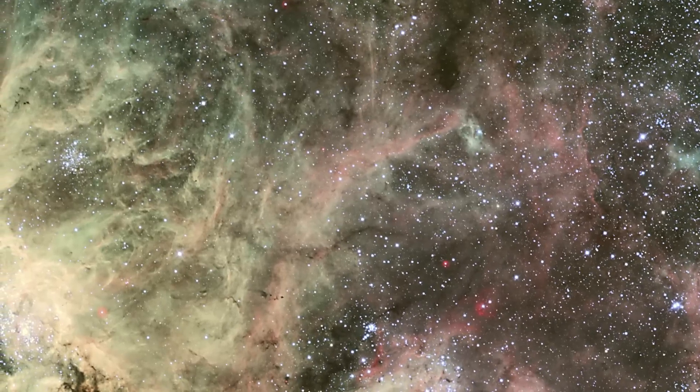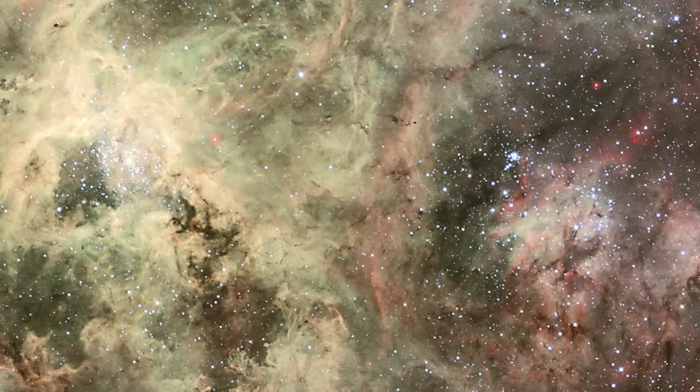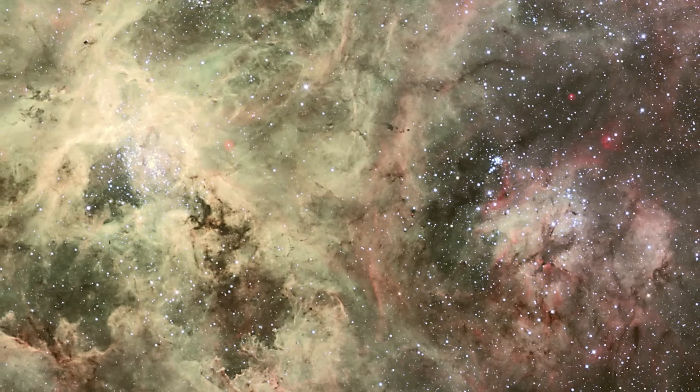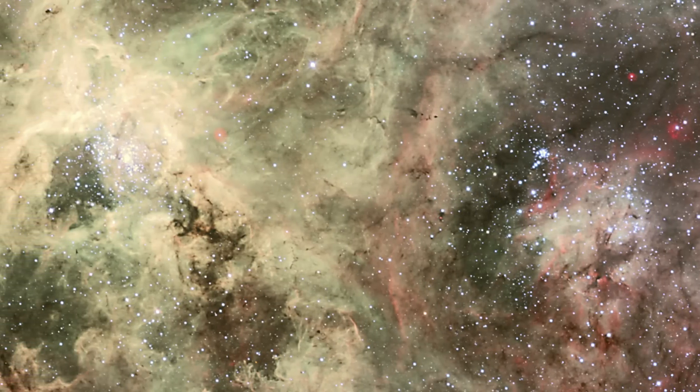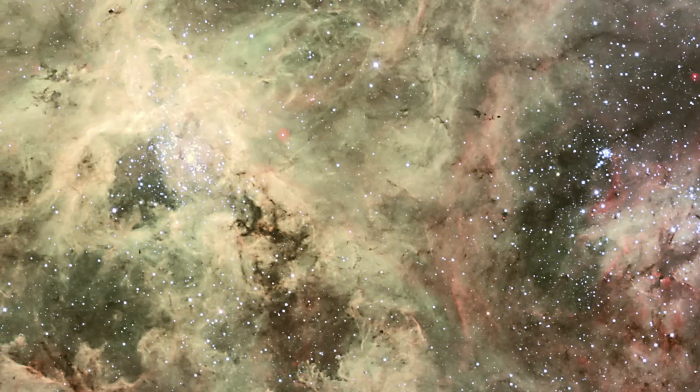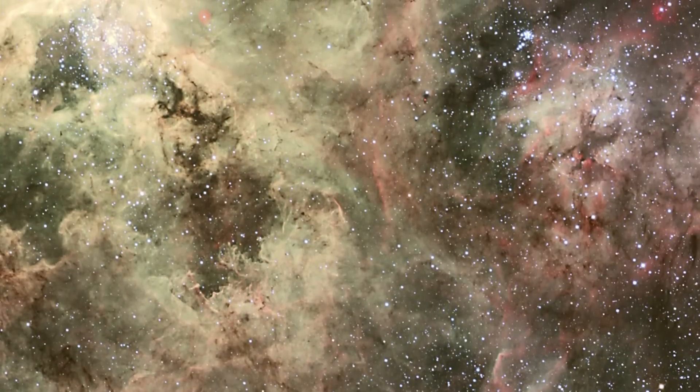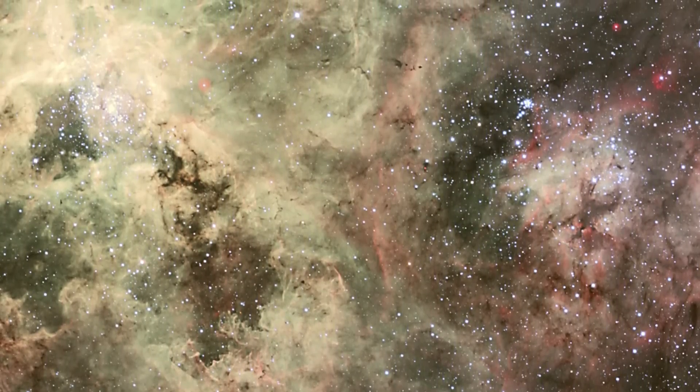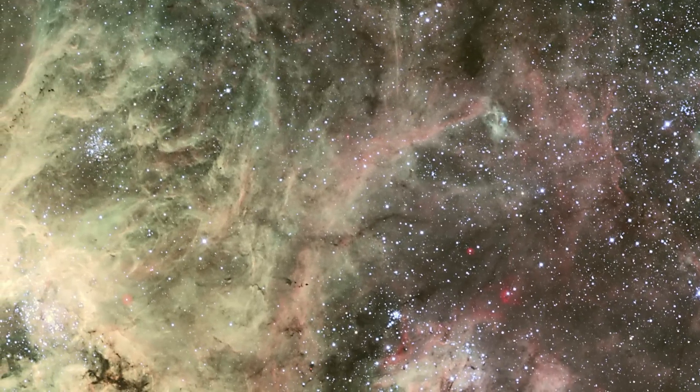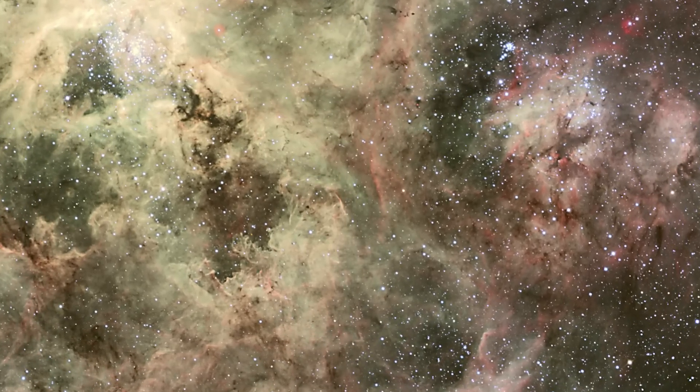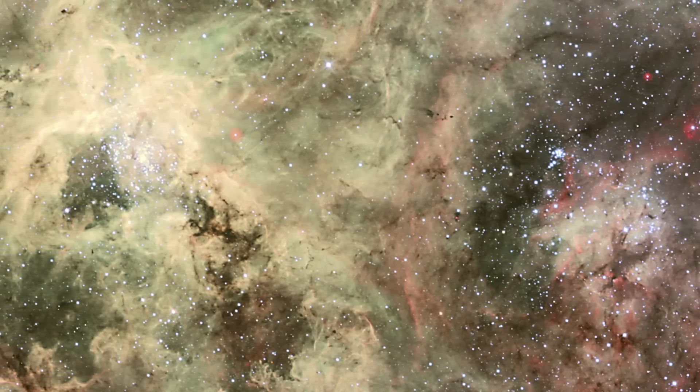Within this image is the runaway heavyweight star called 30-door number 016. It is 90 times more massive than the sun, and is traveling at more than 400,000 kilometers an hour from its home. The young star, only 1 million to 2 million years old, may have traveled about 375 light years from its suspected home in bright star cluster R136. Nestled in the core of 30 Doradus, R136 is one of the most massive young star clusters in nearby galaxies, containing several stars topping 100 solar masses each. 30 Doradus, also called the Tarantula Nebula, resides roughly 170,000 light years from Earth in the Large Magellanic Cloud.